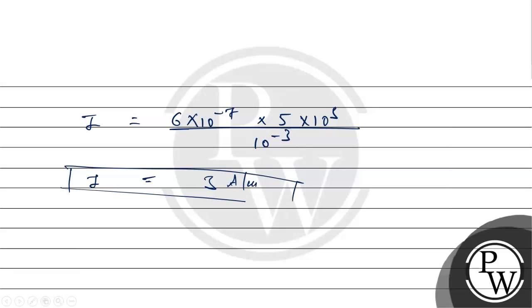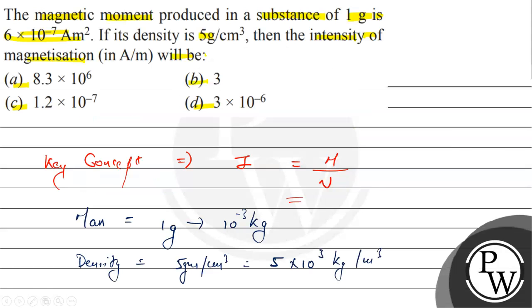So I is equal to 3 ampere per meter. This is your final answer. Hope you understood it well, thank you.